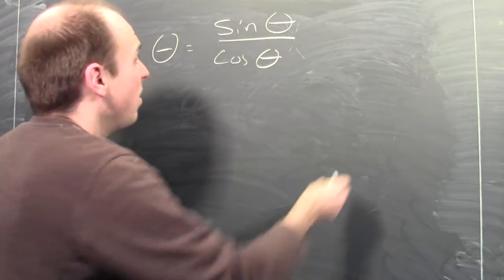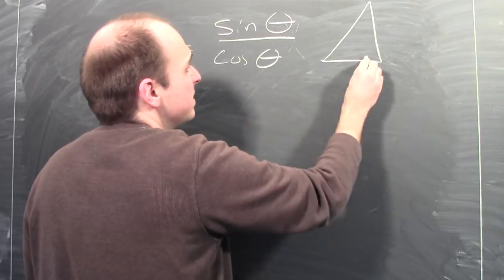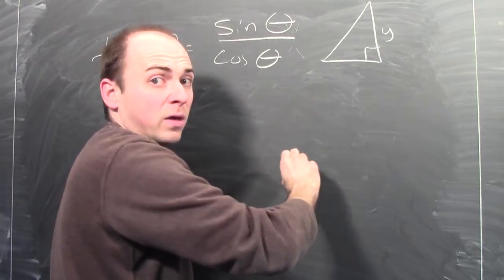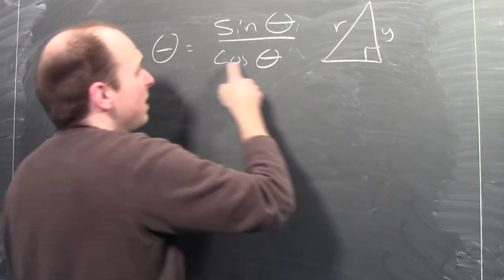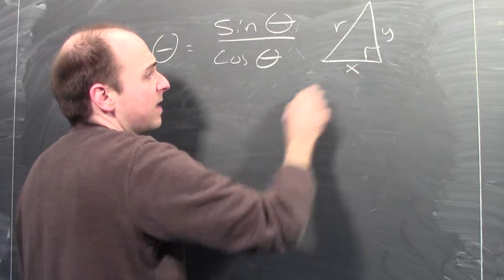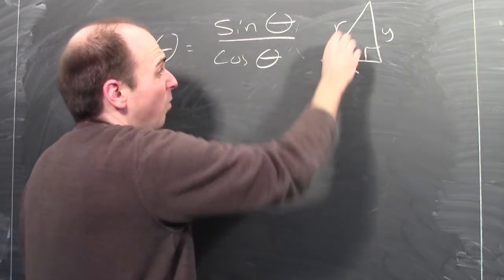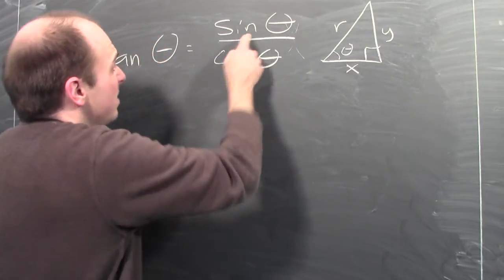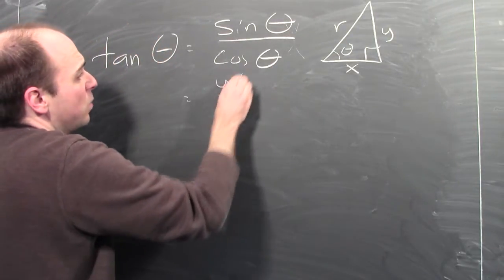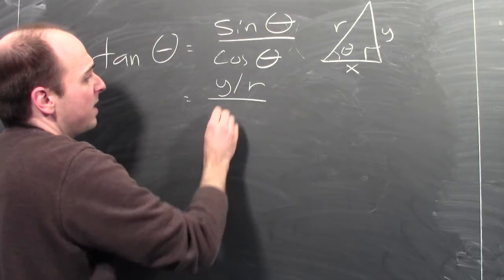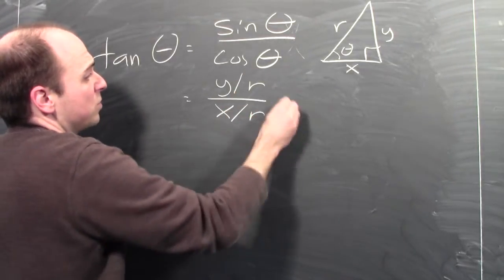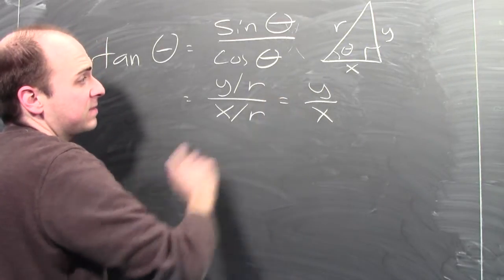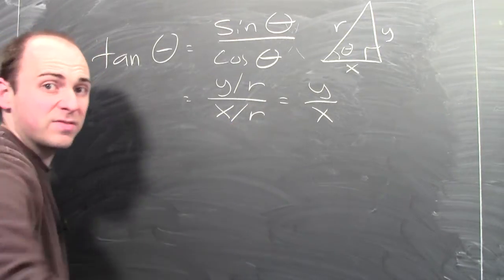Why is this? If you think back to the business about right triangles, sine is the opposite side — I'm calling it y — over the hypotenuse. And cosine is the adjacent side, whose length I'll call x, over the hypotenuse. I'll call this angle theta. Then sine theta is y over r, and cosine theta is x over r. So this fraction simplifies to y over x — that's the opposite side over the adjacent side — that's tangent of theta.